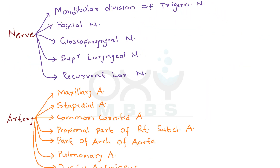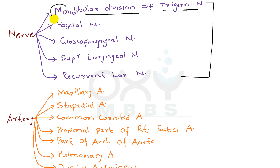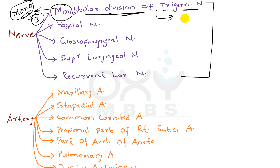Now friends, these are the nerves derived from the different pharyngeal arches. The mandibular division of the trigeminal nerve — 'mandibular' itself contains 'mono,' and mono means number one. So the mandibular division of the trigeminal nerve is derived from the first pharyngeal arch.